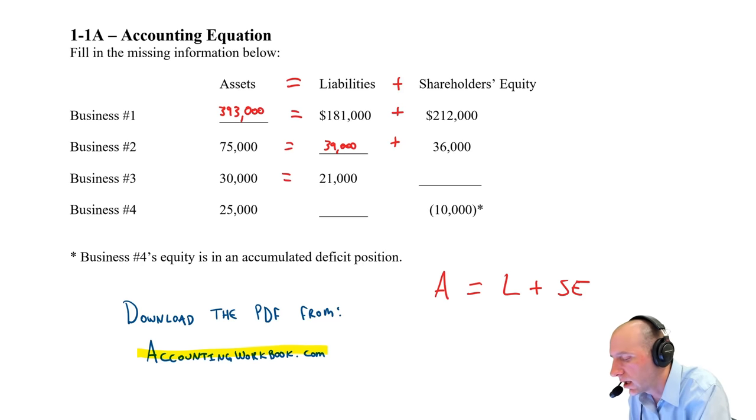Let's do business three. $30,000 is the assets, $21,000 is the liabilities. Our shareholders' equity then, the missing number, has got to be $9,000.